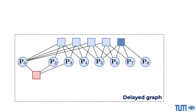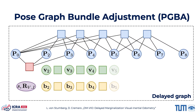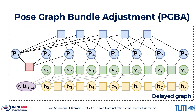For IMU initialization, we can populate the delayed graph with IMU factors and optimize the resulting system. Thanks to delayed marginalization, this optimization captures the full visual uncertainty, which is why we call it pose graph bundle adjustment. Different from bundle adjustment, we do not optimize the points, making it much faster. But different from pose graph optimization, we capture the full uncertainty, making it more accurate.